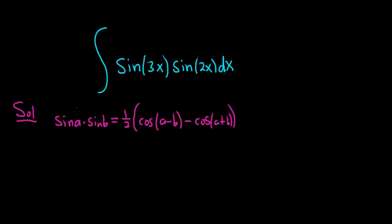So in this problem our a is 3x and our b is 2x. So all we have to do is use the formula. So sine of 3x, sine of 2x is equal to 1 half, parentheses, cosine. And it's a minus b, so 3x minus 2x, so just x, minus cosine of a plus b. So 3x plus 2x is 5x. Good stuff.